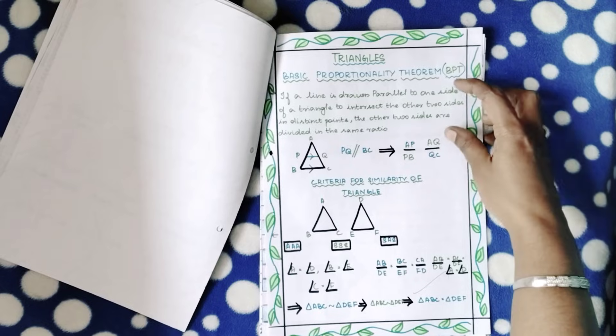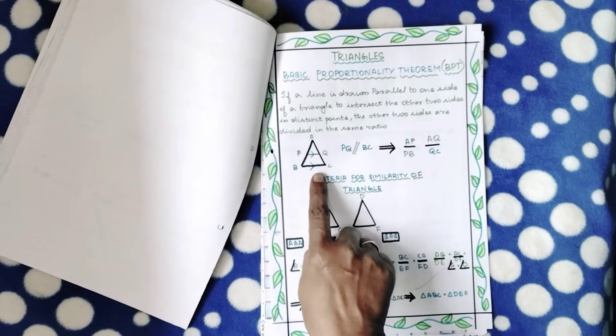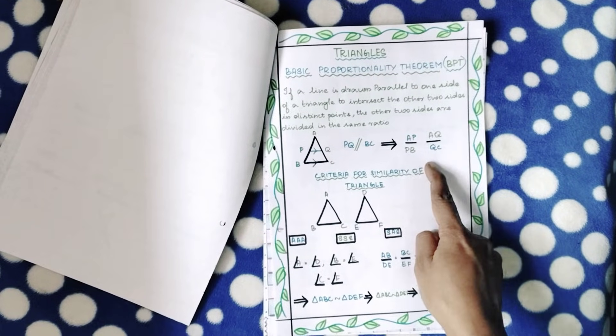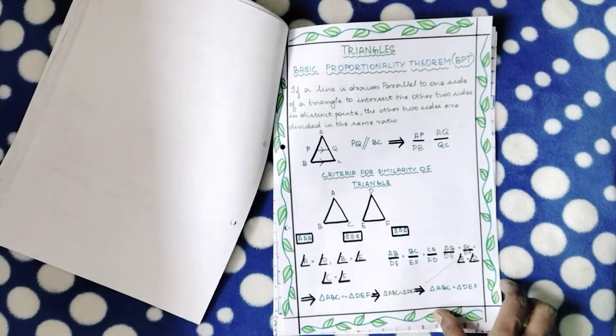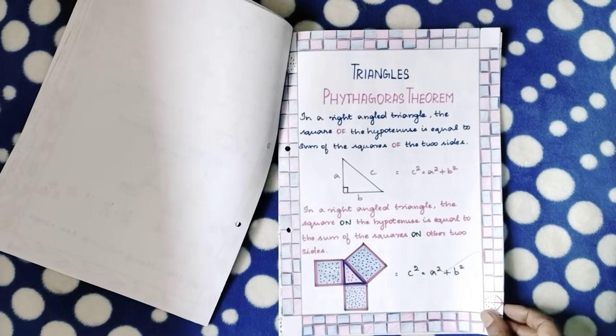The statement is being explained here, and with a simple figure she's done what is given and what is to be proved. The three criteria for similarity she's also done. Then the Pythagoras theorem...